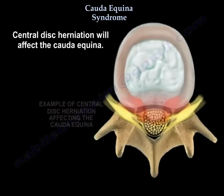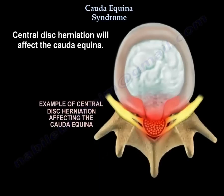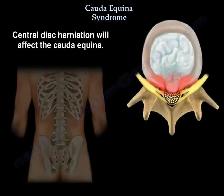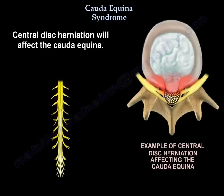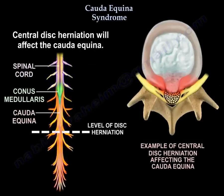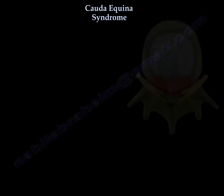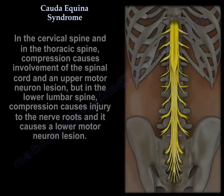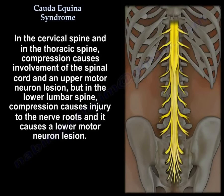Posterolateral disc herniation usually causes unilateral leg pain and weakness with a positive straight leg raising test. Central disc herniation will affect the Cauda Equina. In the cervical and thoracic spine, compression causes involvement of the spinal cord and an upper motor neuron lesion. But in the lower lumbar spine, compression causes injury to the nerve roots and a lower motor neuron lesion.